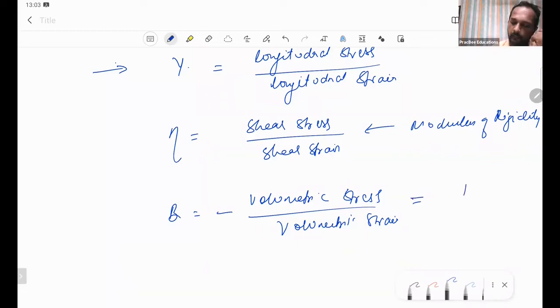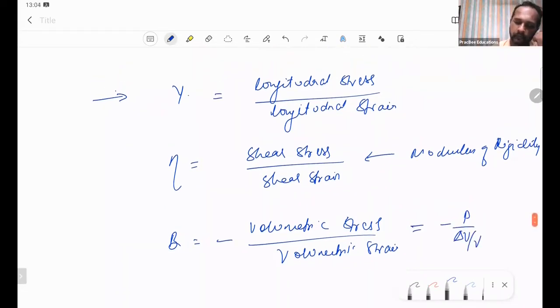So basically this becomes pressure upon delta V by V with a minus sign.